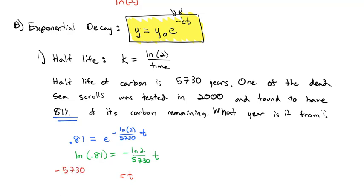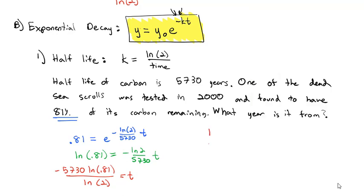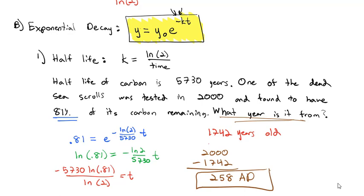To solve for the time, we multiply by negative 5,730 and divide by the natural log of 2. That gives us about 1,742 years old. But the question asks what year it's from. This study was done in 2000. It was 1,742 years old at that time. So when we subtract, we get approximately 258 AD.